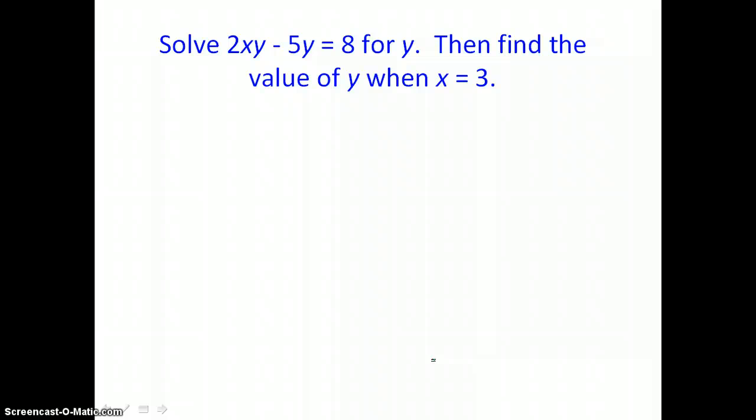In this example, it says to solve for y, then find the value of y when x equals 3. So we'll take this literal equation, 2xy minus 5y equals 8. We have y in two terms, and we want to solve for y. So our first step is going to have to be to use the distributive property and get y out of those two terms. That's going to leave 2x minus 5 in parentheses, and we'll always check this step by distributing. y times 2x is 2xy, and y times negative 5 is negative 5y. So we haven't changed the value of anything, but now we have 1y.